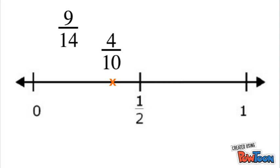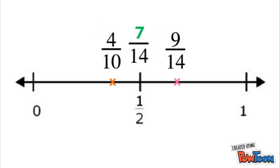Next, we look at the other fraction, and we see that the denominator is 14. So we ask ourselves, what is half of 14? 7. So 7 fourteenths is 1 half. So now we compare 9 fourteenths to 7 fourteenths and see that 9 fourteenths is bigger. So 9 fourteenths must be to the right of 1 half.